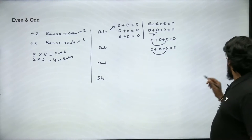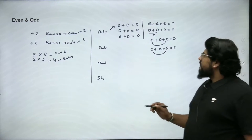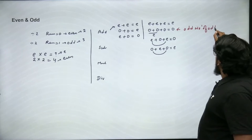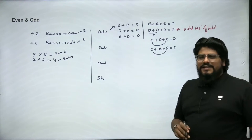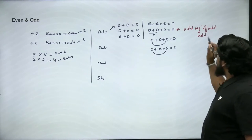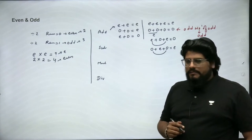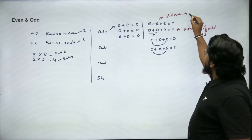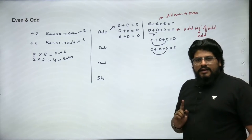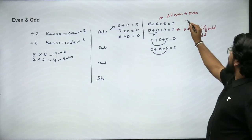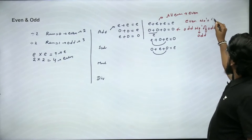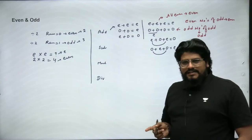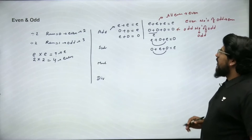Here is one quick property you need to understand: if there are an odd number of odds — three odds, five odds — the result will always be odd. If all numbers are even, the result will always be even in addition. If all numbers are odd, the result is even. If there are an even number of odds in a summation, the result is even; if there are an odd number of odds, the result is odd. These are the two basic things to remember for even and odd addition.